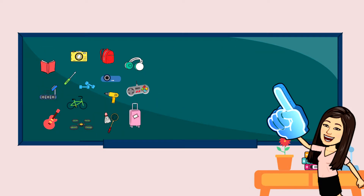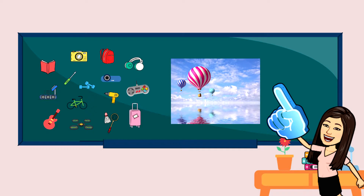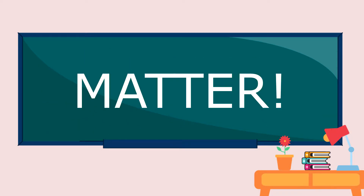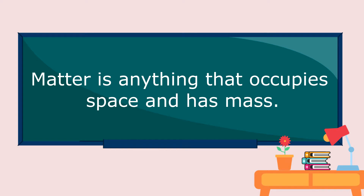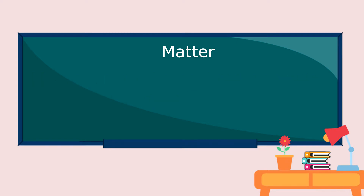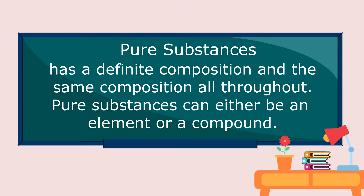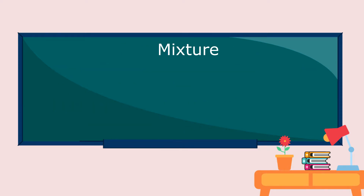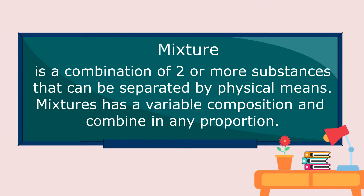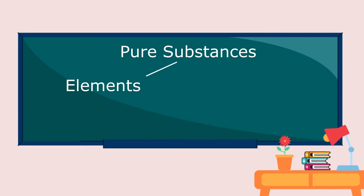If we are going to look around us, there are a lot of things that we can see. Everything in this world is made up of matter. Matter is anything that occupies space and has mass. Matter can be classified into two: pure substances and mixtures. Pure substances have a definite composition and the same composition all throughout. Pure substances can either be an element or a compound. Mixture is a combination of two or more substances that can be separated by physical means. Mixtures have a variable composition and combine in any proportion. Under pure substance, we have elements and compounds.